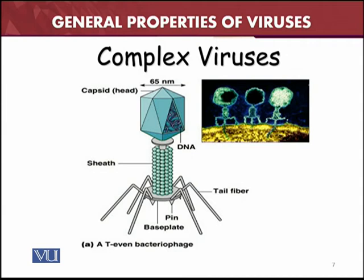For complex viruses, we take the example of the T-even bacteriophage. It has a capsid of about 65 nanometers and contains DNA inside — making it a DNA virus. The sheath is helical in shape while the capsid containing the nucleic acid is icosahedral. It also contains tail fibers and base plates. Bacteriophages are the most complex viruses and are very difficult to handle. The electron microscope shape is also shown.